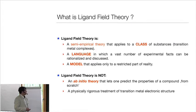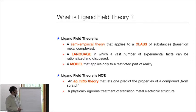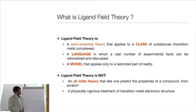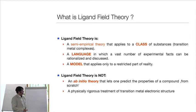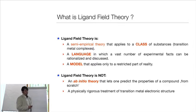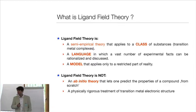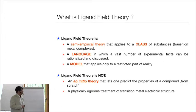So what is ligand field theory? Ligand field theory is a semi-empirical theory that applies to a class of substances — namely, transition metal complexes. It is the language in which we can cast and interpret a large number of experimental facts. Obviously it's a model that only applies to a restricted part of reality. That's the nature of a model — it's not a shortcoming, it's the intention of a model to only apply to a restricted part of reality.